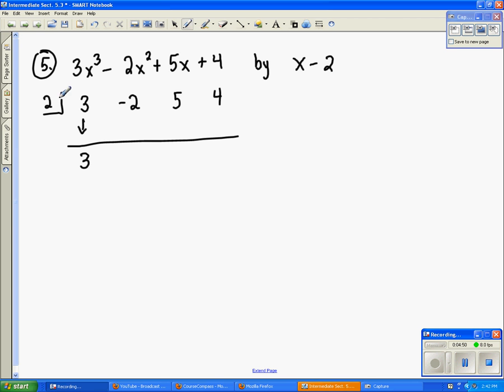Drop the first. Then we say 2 times 3 is 6. Add down. Negative 2 plus 6 is 4. 2 times 4 is 8. Add down. 5 plus 8 is 13. Now we multiply again. 2 times 13 is 26. Add down to get 30.